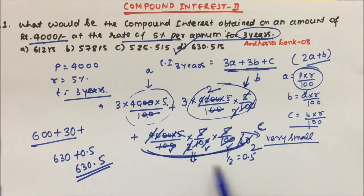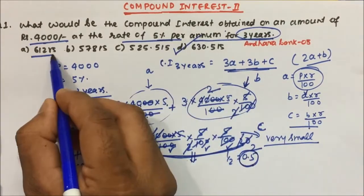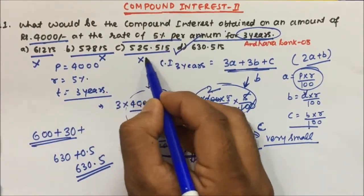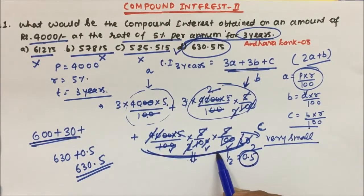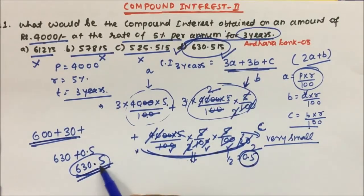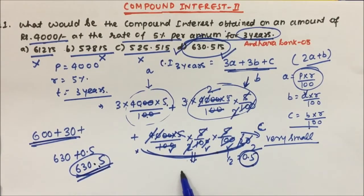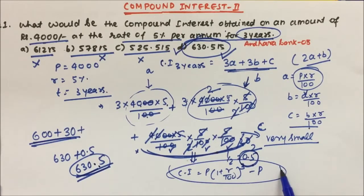The c term gives a very small value of 0.5 which you can easily ignore. So after getting 630, you check the options: 612 — no; 578 — no; 525 — no; 630 — yes. The last c term gives a very small value you can simply ignore. Using the traditional formula, CI = P(1 + r/100)^n - P with n=3, your calculation becomes very much lengthier.